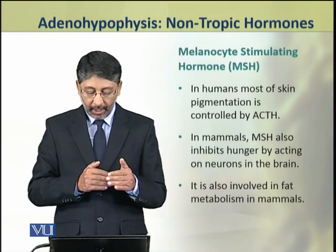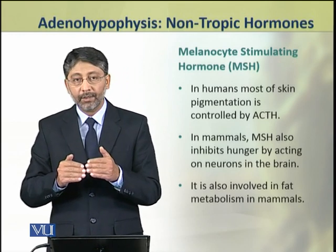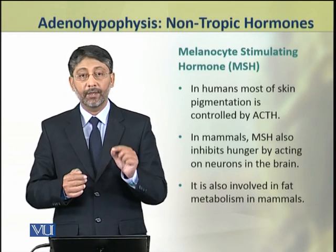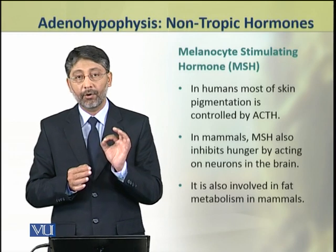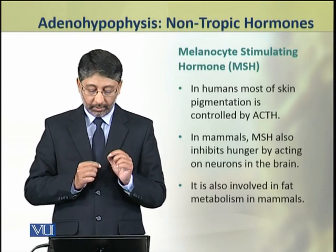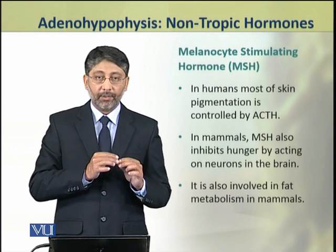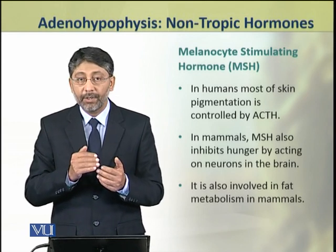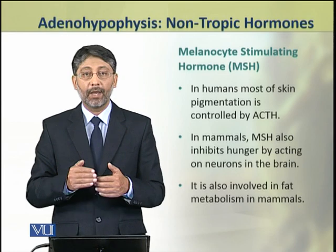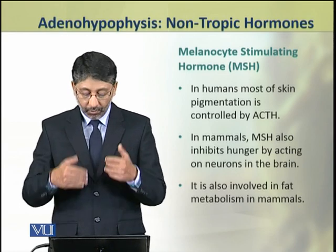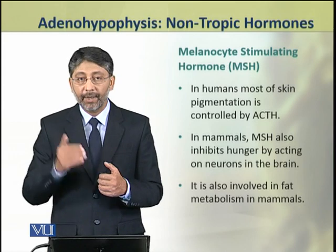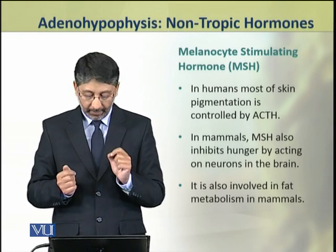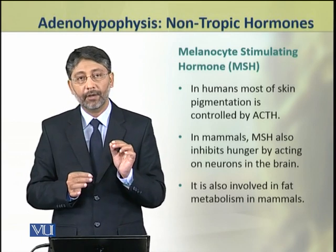In humans, MSH is not significantly produced, and skin pigmentation is largely controlled by ACTH, the adrenocorticotropic hormone. Besides controlling melanocytes, MSH also plays other roles. For example, in mammals it affects hunger — it inhibits the sensation of hunger by acting on certain neurons in the brain. It is also involved in fat metabolism.